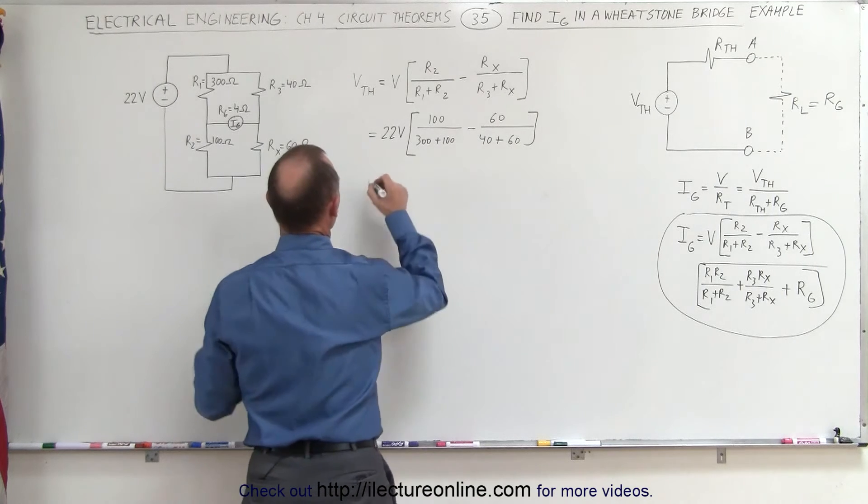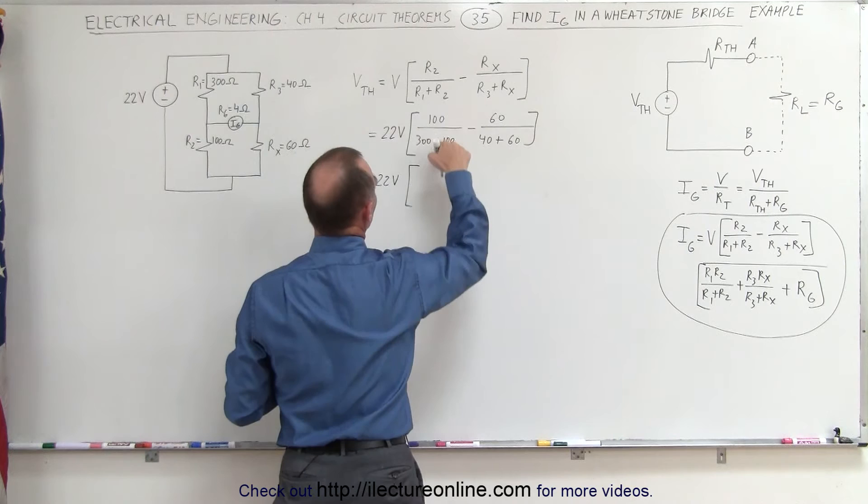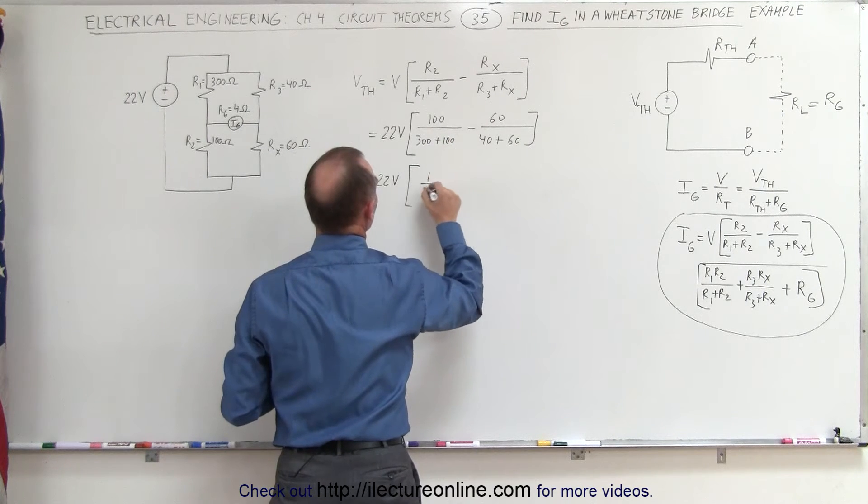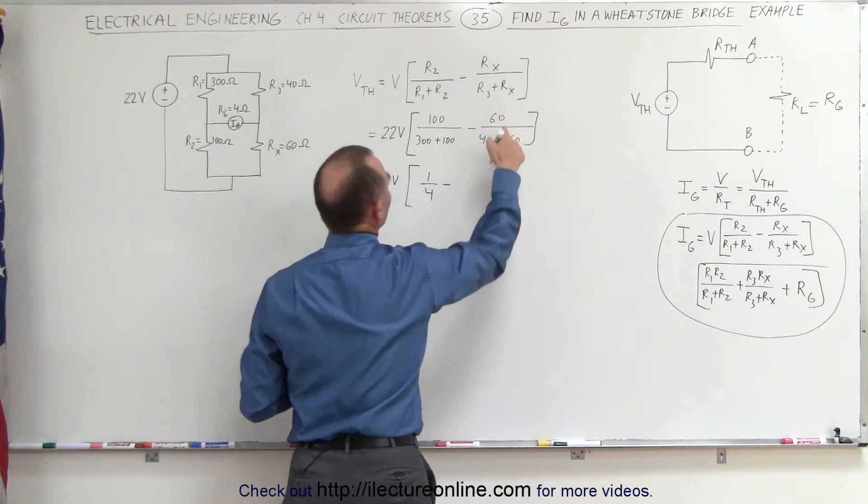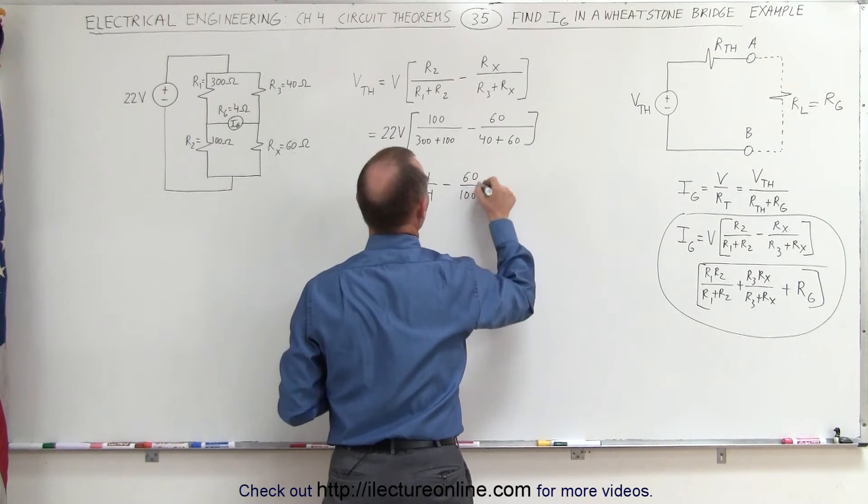All right, continuing with this. This is equal to 22 volts times, that's 100 divided by 400, which is one quarter, minus 60 divided by 100. Let me just go ahead and write that.